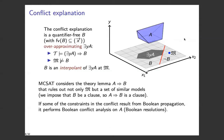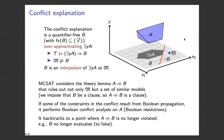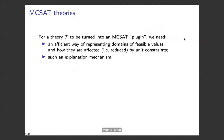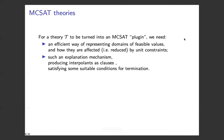If some of the constraints in the conflict result from Boolean propagation, we perform Boolean conflict analysis using Boolean resolution. MCSAT will then backtrack to a point where ¬A ∨ B is no longer violated — for instance, where B no longer evaluates to false. Once you have theory T and want to turn it into a plugin for MCSAT, you need two ingredients: an efficient way of representing domains of feasible values and how they are affected by unit constraints, and an explanation mechanism that produces interpolant clauses. There are conditions to ensure termination, but I'll skip over them.